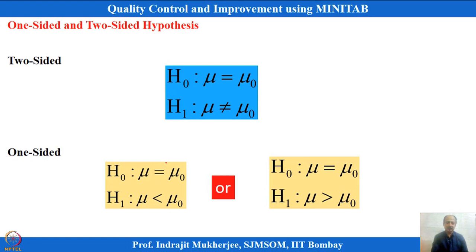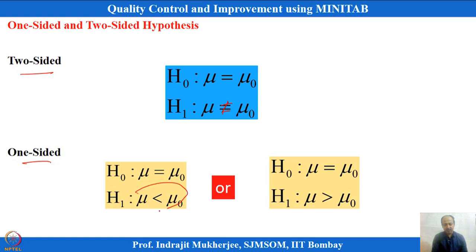Hypothesis testing can be two-sided — the not-equals-to condition — meaning the value can go on either side of mu-zero: it can be greater than or less than. Hypothesis testing can also be one-sided, meaning strictly less than or strictly greater than. This imposes a strict condition on one side only, which is called a one-sided statement.